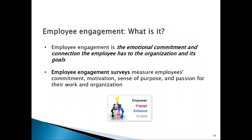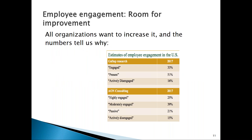Nine out of ten employees say they don't get clearly spelled out, reasonable expectations. They don't have the tools or resources necessary to meet expectations. They don't get honest or accurate feedback. And they don't get fair recognition and rewards exchanged for their performance. When we look at engagement data, studies from Gallup Research and Aon Consulting show similar results: 33% of employees are actively engaged, 51% are only present, and 16% are actively disengaged.